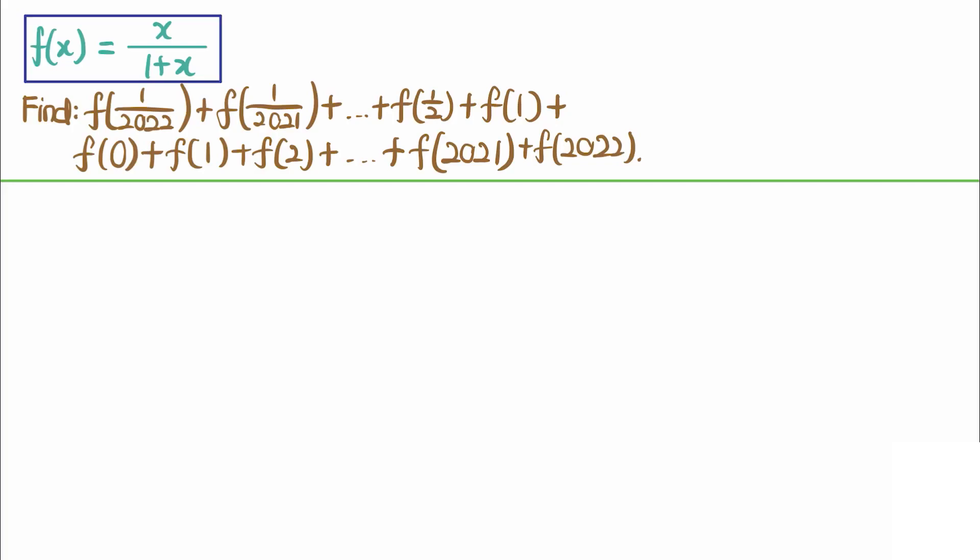We let the function f of x equals x over 1 plus x, and we want to find the following sum: f of 1 over 2022 plus f of 1 over 2021 up until f of 1 over 2 plus f of 1 plus f of 0 plus f of 1 and continue on until we get f of 2022.